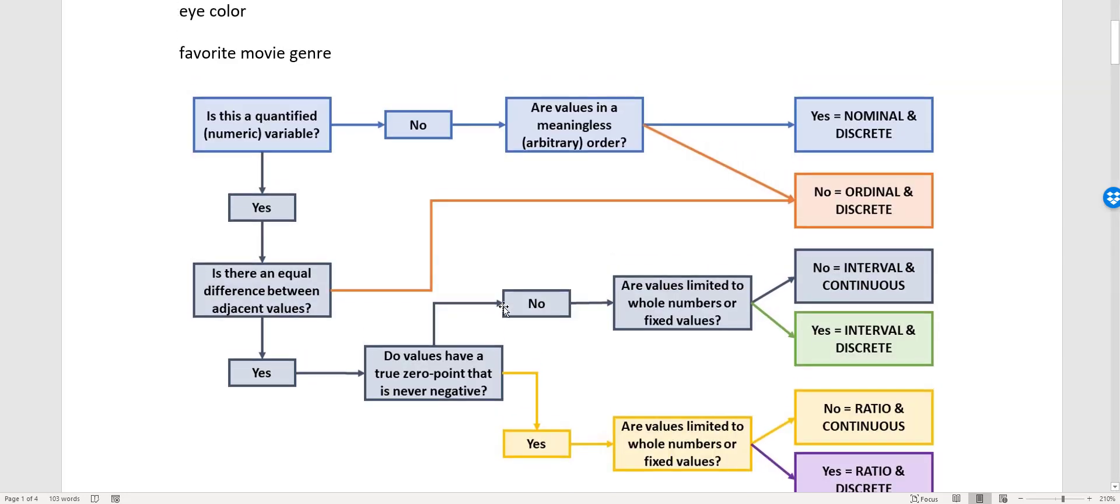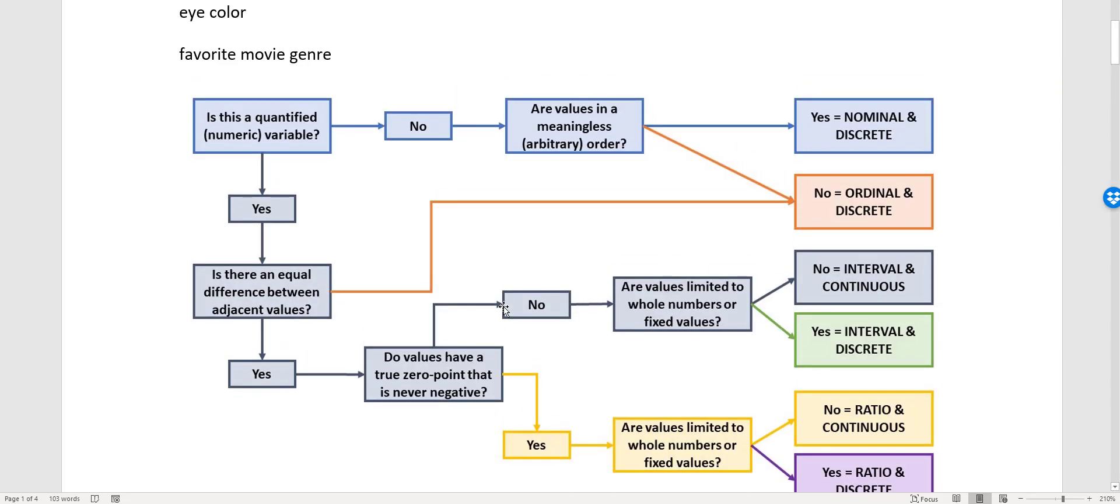Now let's take a look at favorite movie genre as an example. It depends on how you measure it, right? Let's assume that we're measuring favorite movie genre is literally what is your favorite genre. Comedy, horror, drama, whatever, those categories - not numbers. If you put them in an order, it would be meaningless because it would be based on your own favorability.